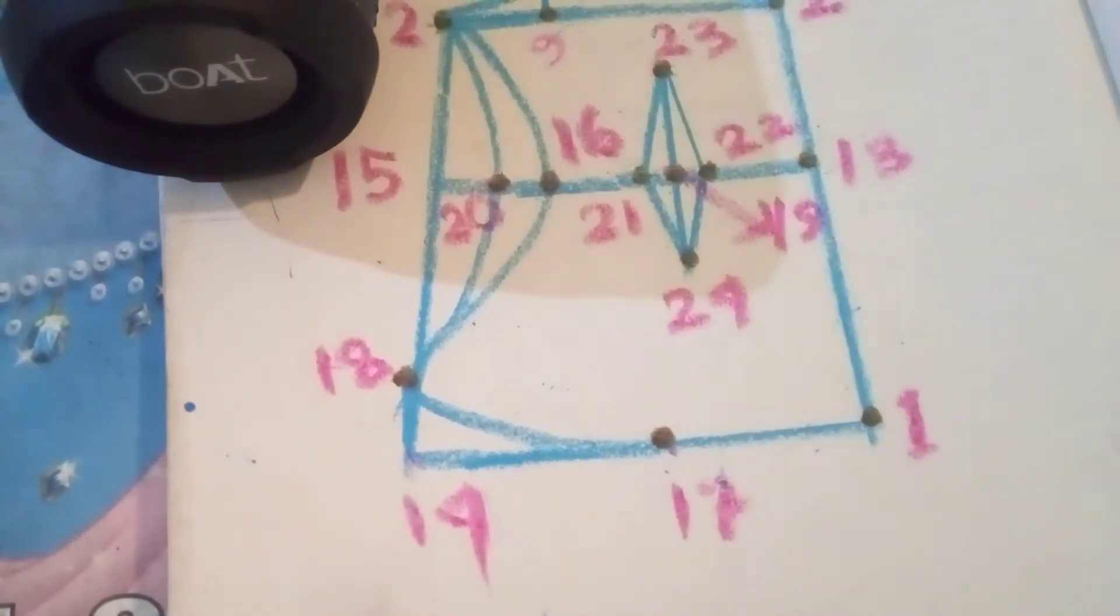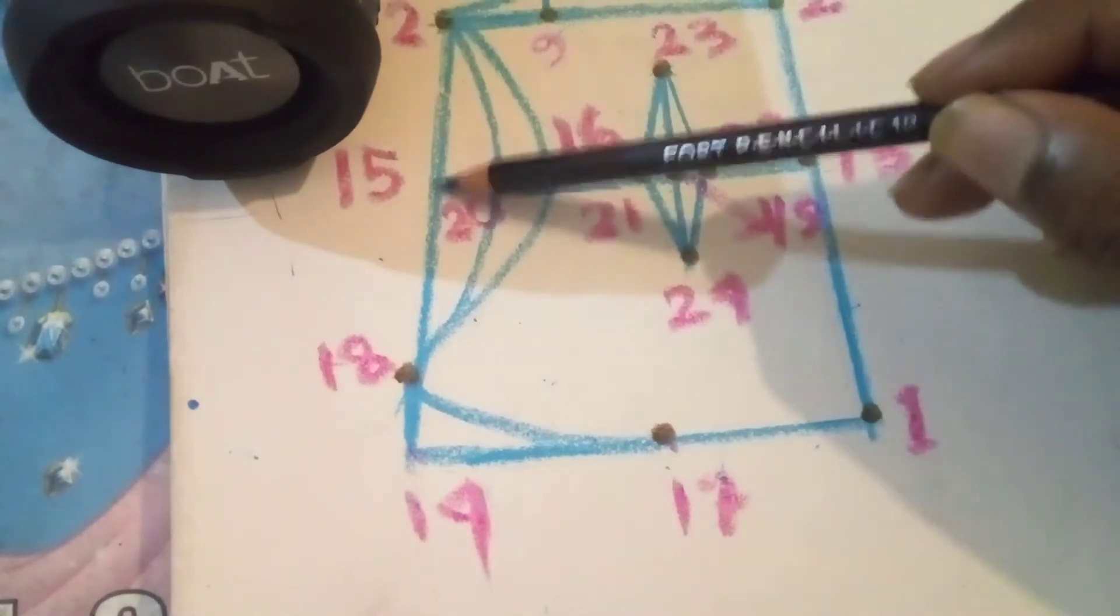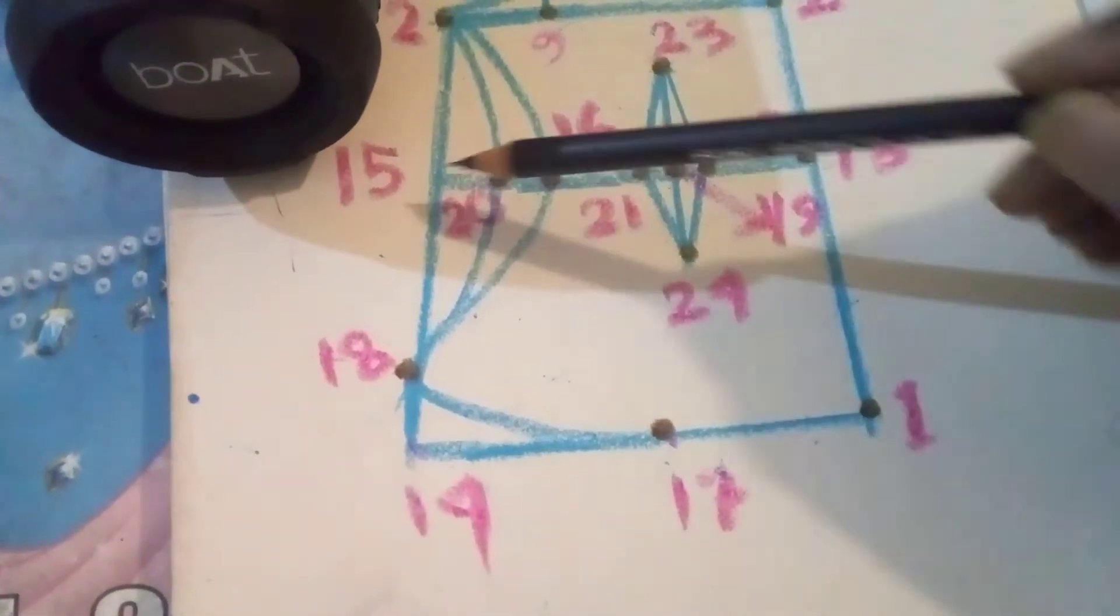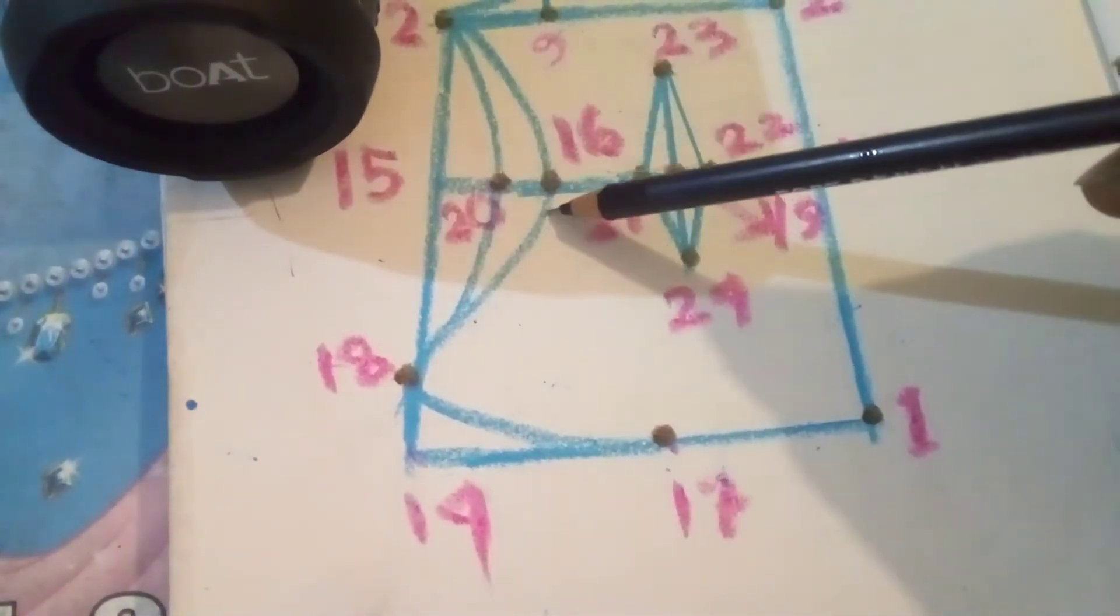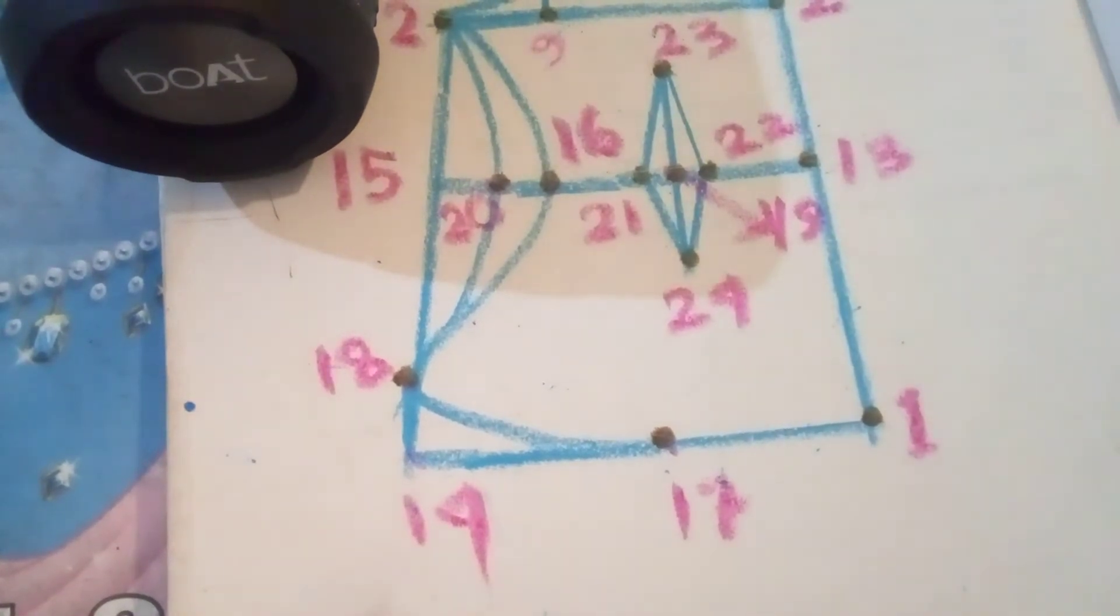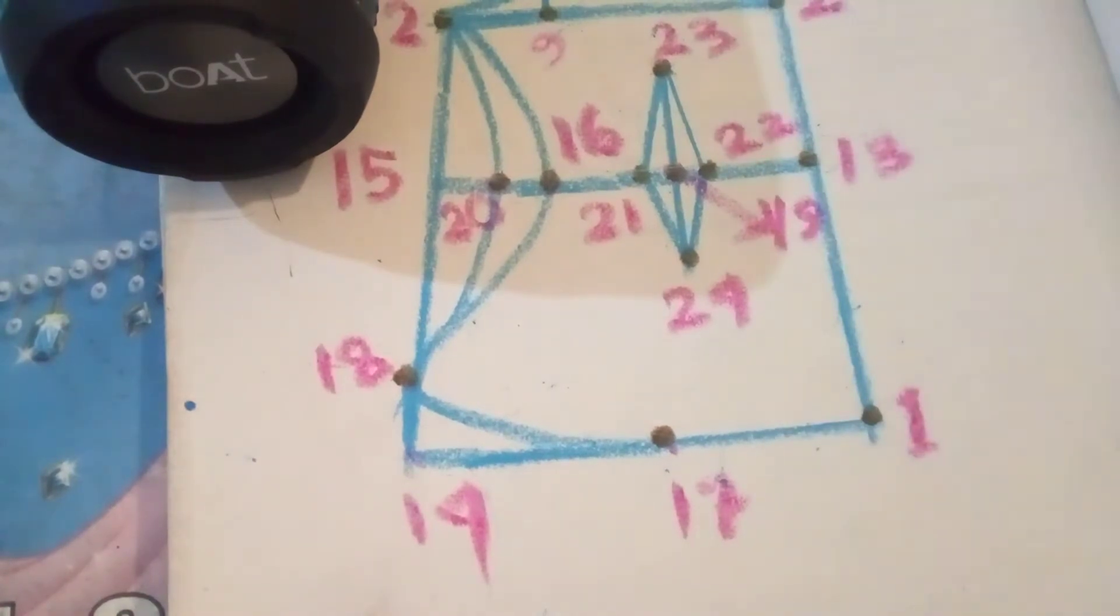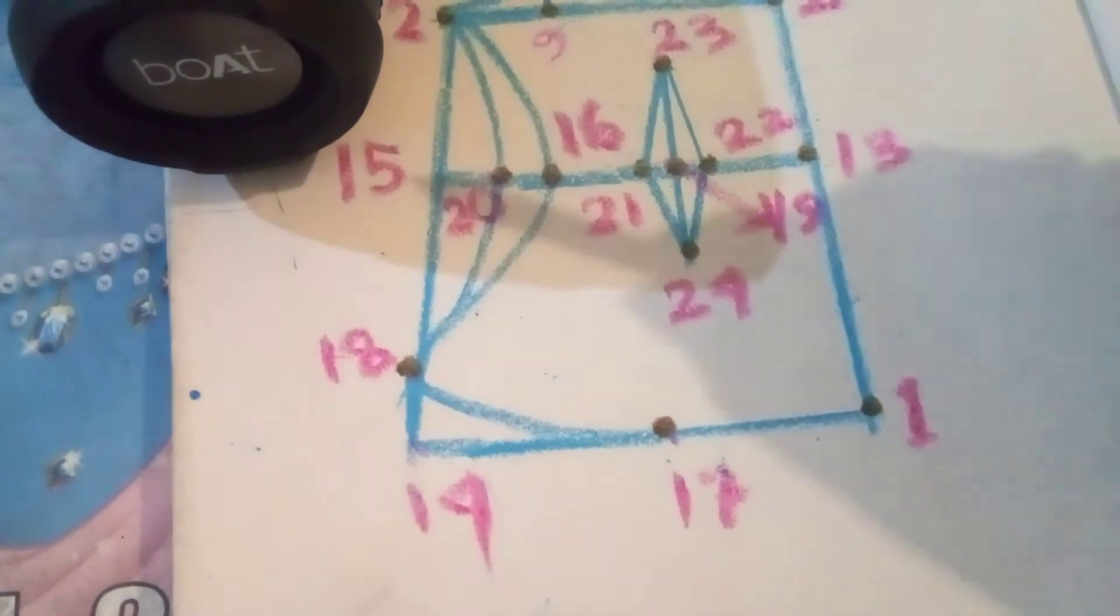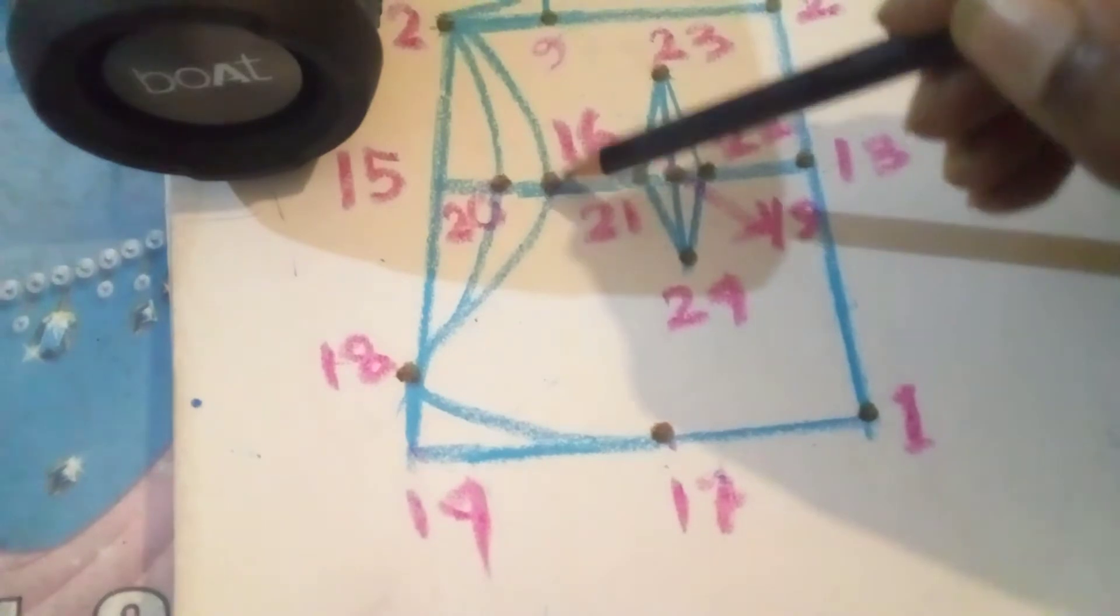Next one, I am going to write down 15 and 16. This is 15, this is 16. This point is 15 and this point is 16. Same way, 15 and 16 take a midpoint. New point is 20.